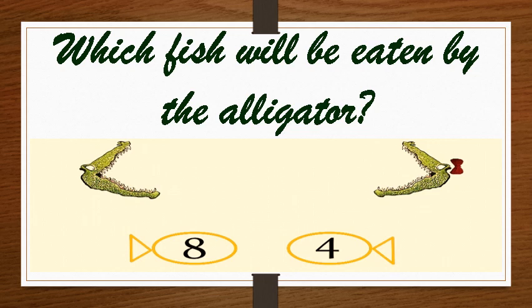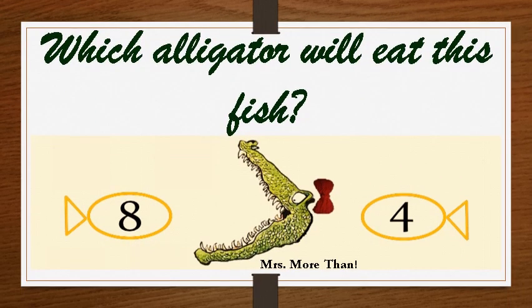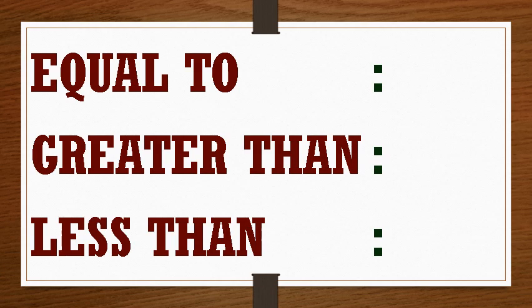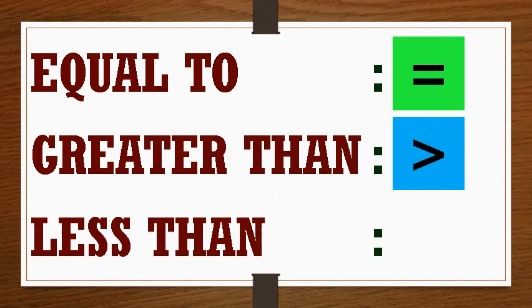Awesome! What's special for dinner? Fish number 8 and fish number 4. Which fish will be eaten by the alligator? Fish number 8. Yippee! Now, it's Mrs. More Than alligator's chance. She is going to eat fish number 8 as it is greater than fish number 4. So, the signs of comparison are as follows: Equal to, Greater than, and less than.